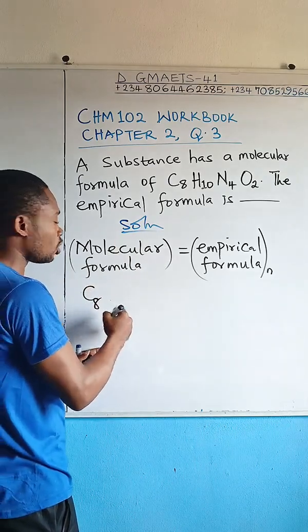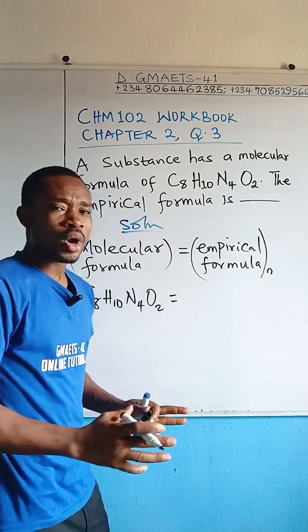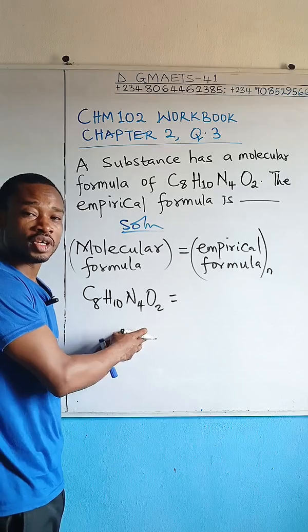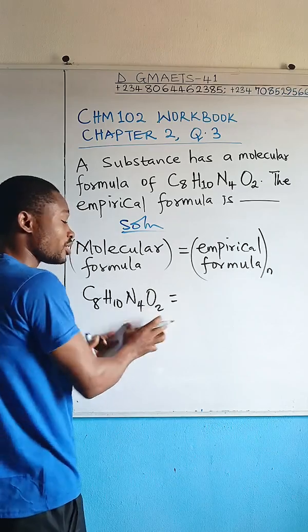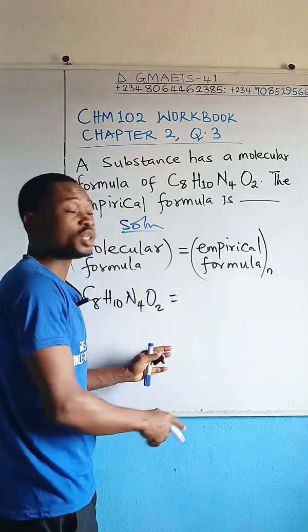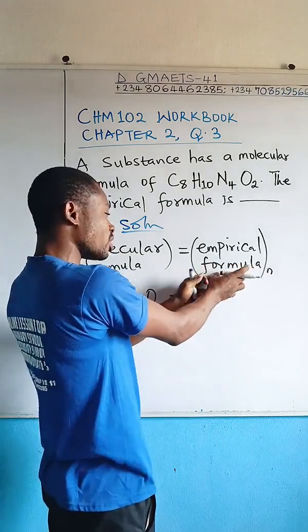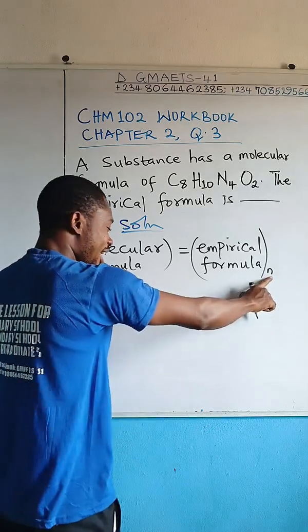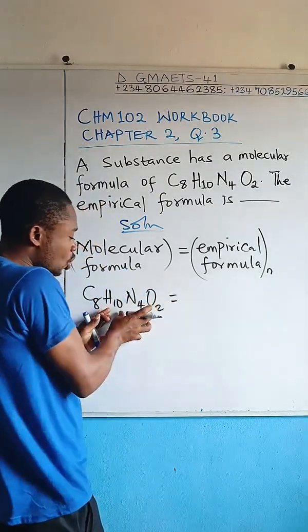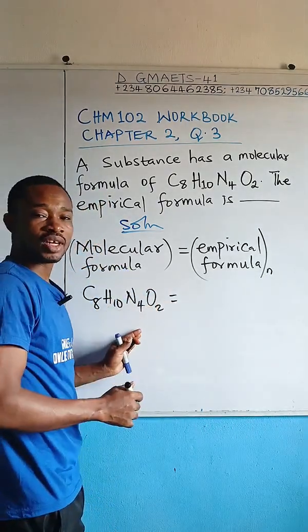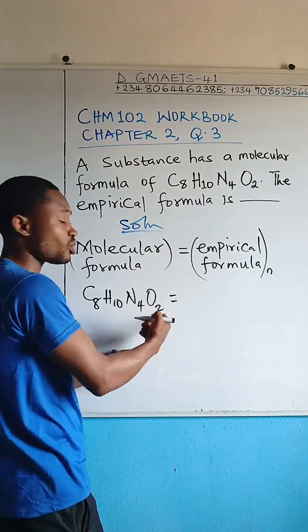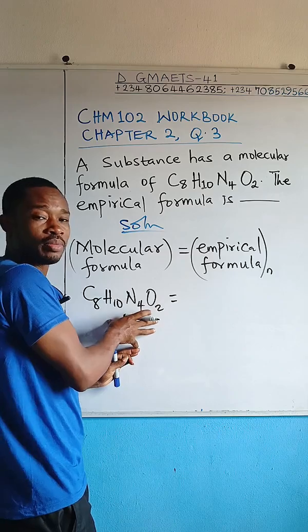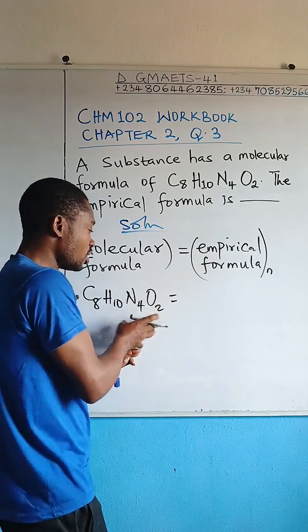Our molecular formula is C8H10N4O2. We need to perform some factorization to find n, which is then multiplied by the empirical formula to give the molecular formula. To obtain n from the molecular formula, we factorize the highest common factor from the atomicities, which is two.